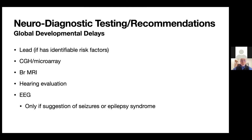If a child has delays and is dysmorphic — particularly if they have more than two dysmorphisms and an intellectual delay — we should consider obtaining a microarray or CGH. Brain MRIs are indicated if we have concerns for structural problems, prematurity, or hypoxic brain injury. If there are language delays, we need to check their hearing. EEG is typically not a first-line test for delays, but if we have concerns for seizures, we should absolutely check one.